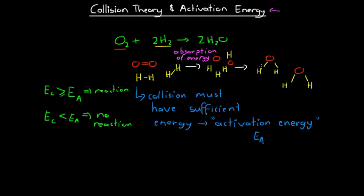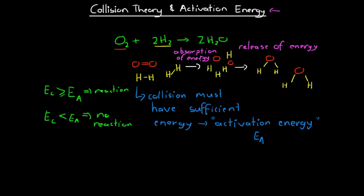When the new bonds are formed and the product molecules are formed, that constitutes a release of energy. When bonds form in our product, energy is released. So it's a two-step process: we start off with our molecules, they collide with energy greater than the activation energy, that energy is absorbed and all the bonds break. Then as bonds form in our products, that causes a release of all or part of the energy that was absorbed. And so we get a graph — if we were to graph energy against time.